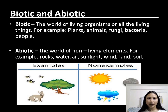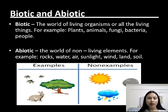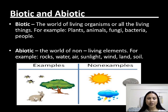We have biotic and abiotic. Biotic refers to the world of living organisms — all the living things. For example, plants, animals, bacteria, fungi, etc. Abiotic refers to the world of non-living elements. For example, rocks, water, air, sunlight, wind, land, and soil, as you can see in the examples.